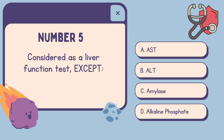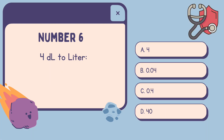Number 5: Considered as a liver function test, except — A. AST, B. ALT, C. Amylase, D. Alkaline Phosphatase. The correct answer is C, Amylase.